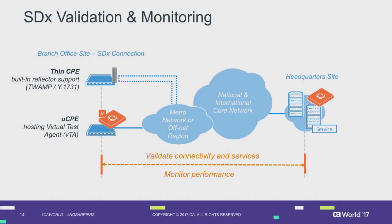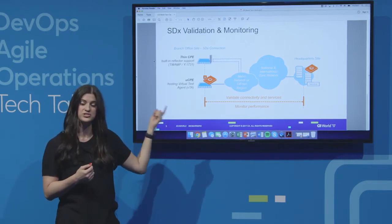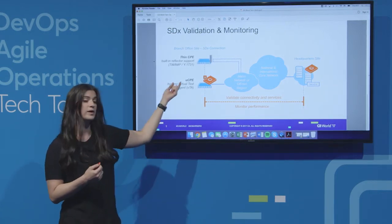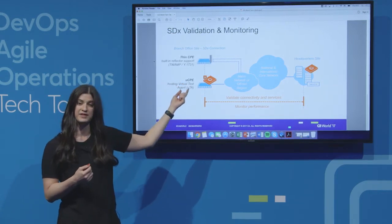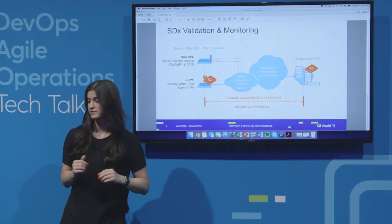In this demo, we're going to have a new branch office site that we are deploying. We've got the headquarters site in New Hampshire, and we're turning up a new branch office in Massachusetts. We can either have a virtual test agent hosted on a UCPE or an embedded reflector in a thin CPE, and we'll show a little bit about both of these.